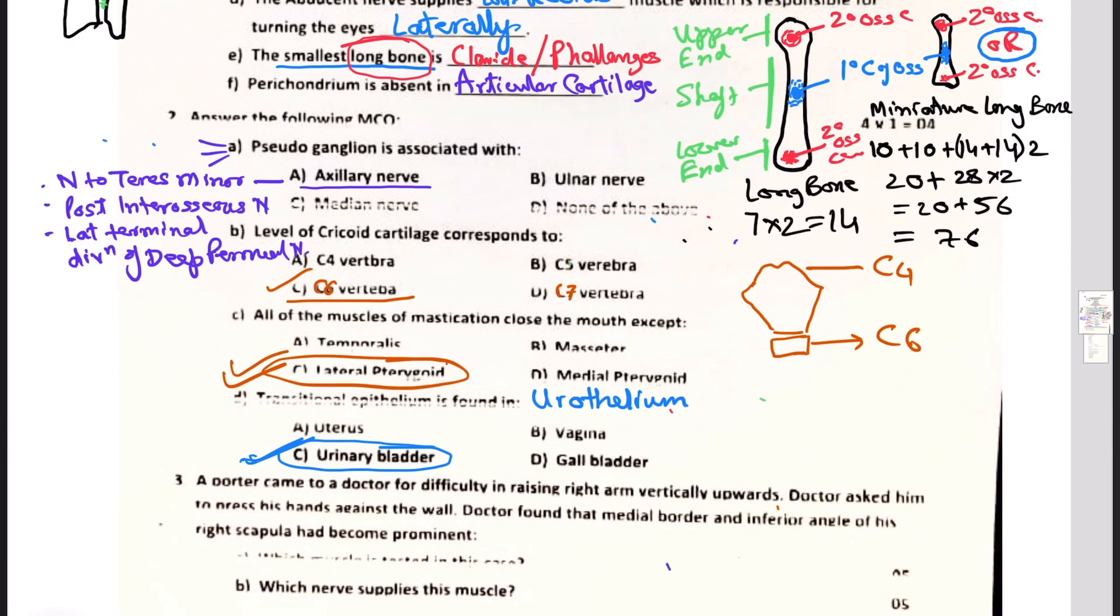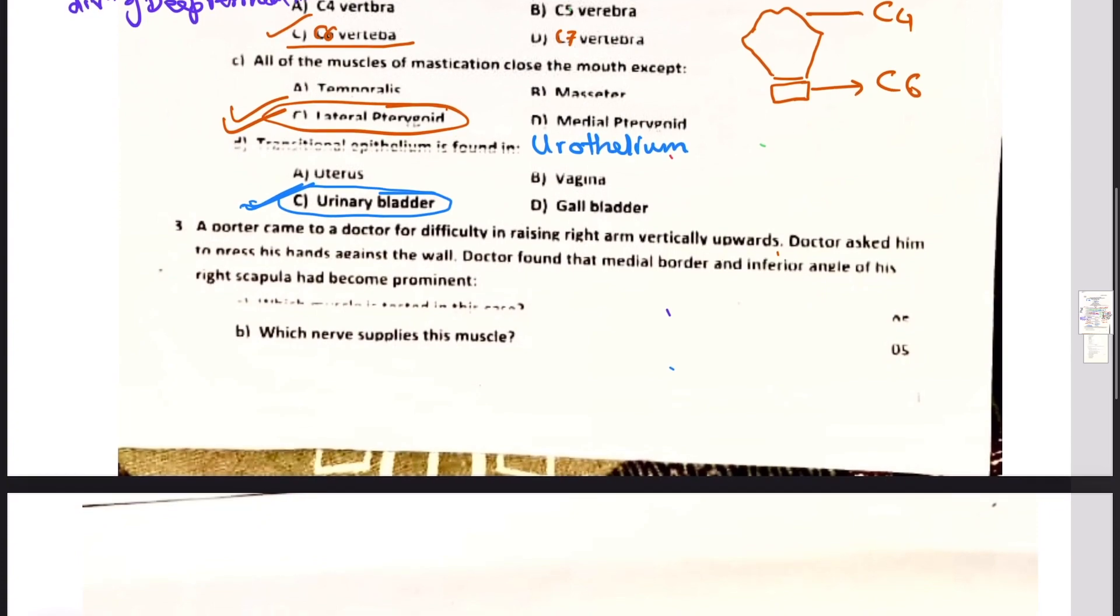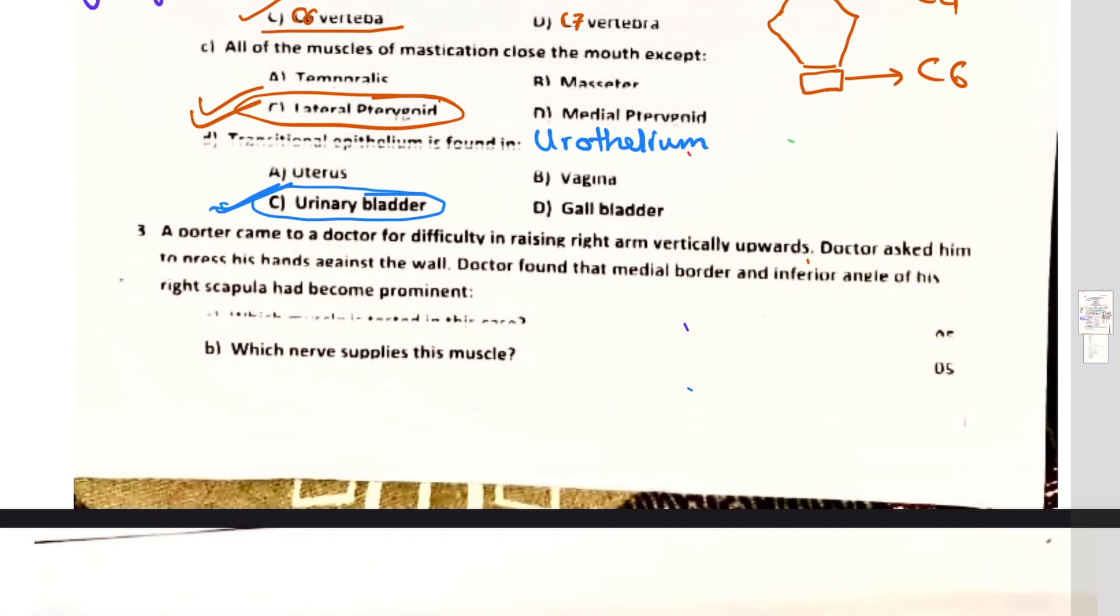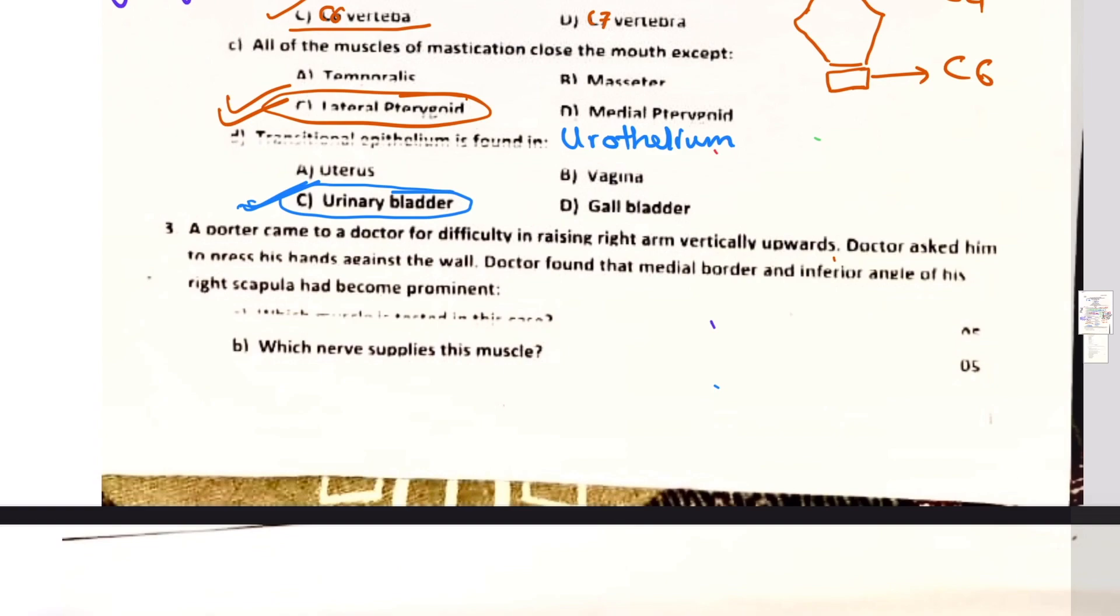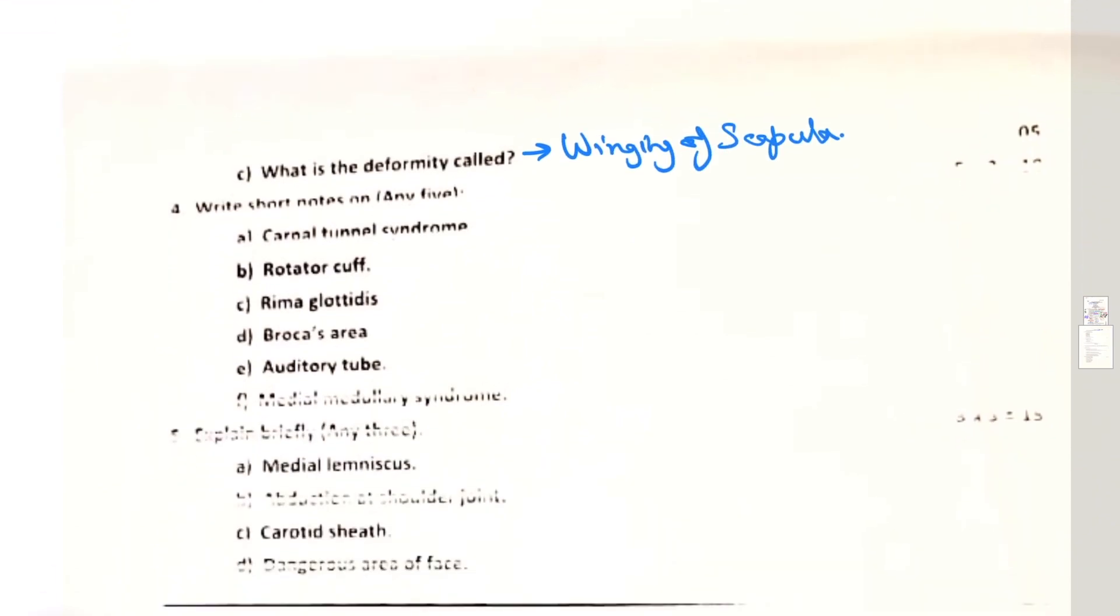Question number three was: a porter came to a doctor for difficulty in raising his right arm vertically upwards. Doctor asked him to press his hands against the wall. Doctor found that medial border and inferior angle of his right scapula had become prominent. Which muscle is tested in this case? This is serratus anterior. What is nerve supply for this muscle? Roots C6, 7, and 8 from the anterior primary rami. What is the deformity called? Winging of scapula.